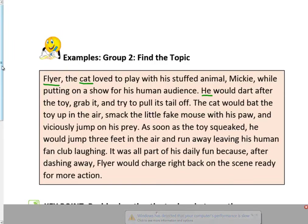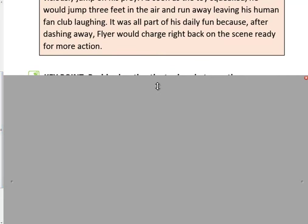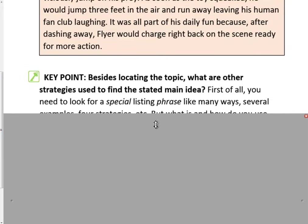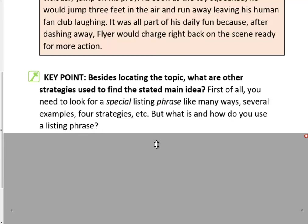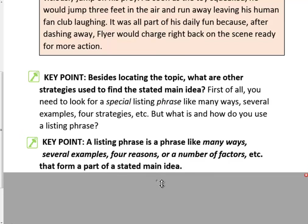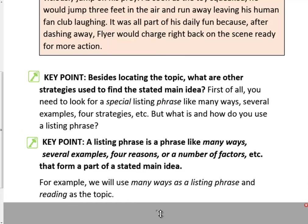Let's move on to another key point. Besides locating the topic, what other strategies are used to find the stated main idea? First of all, you need to look for a special listing phrase like 'many ways,' 'several examples,' 'four strategies,' etc. A listing phrase is a phrase that looks like 'many ways,' 'several examples,' 'four reasons,' or 'a number of factors' that forms part of a stated main idea. In the next example, we're going to use the phrase 'many ways' as a listing phrase and 'reading' as the topic.